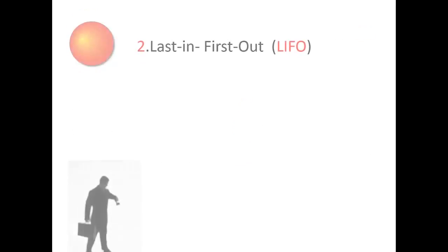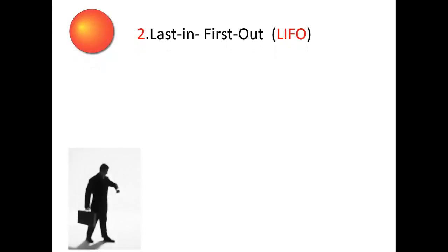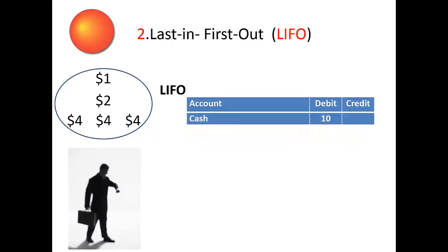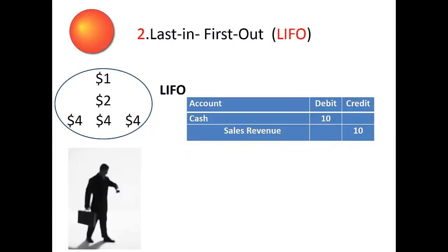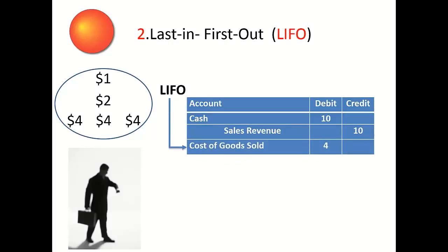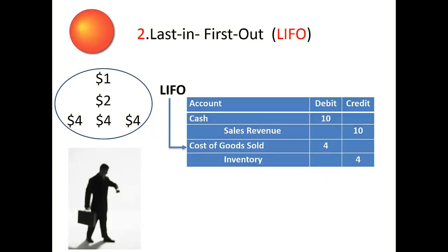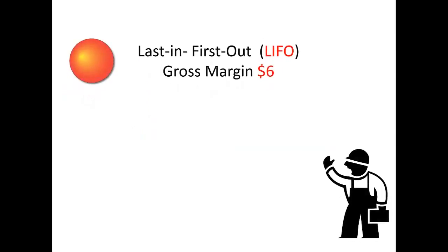Last In, First Out – LIFO. Management assigns the unit cost of the last unit purchased in to become the unit cost of the first goods sold out. On the sales side: debit cash $10, credit sales revenue $10. On the expense side: debit cost of goods sold $4, increasing that expense, and credit inventory $4, decreasing inventory. LIFO's gross margin turns out to be $6.